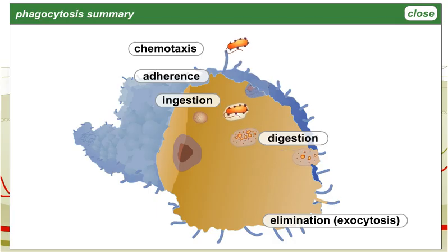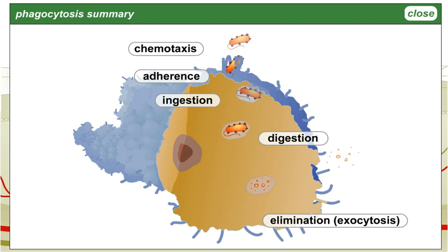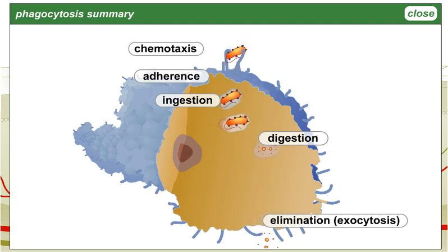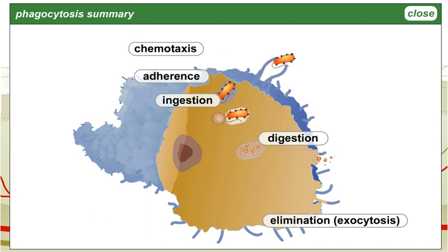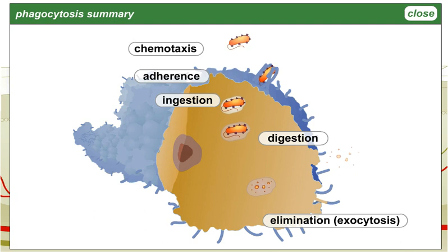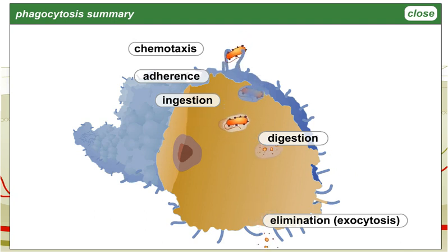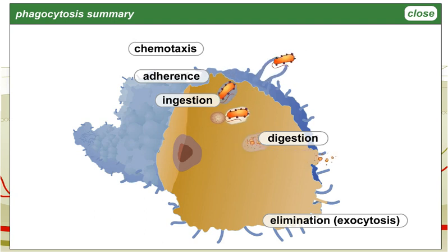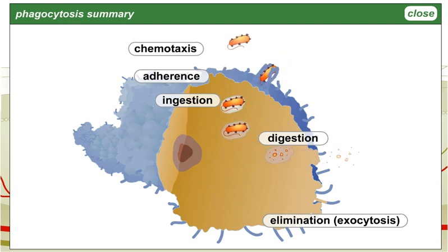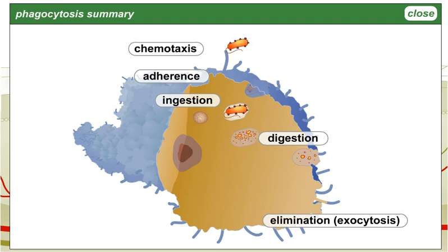Certain immune system cells, such as macrophages and neutrophils, utilize phagocytosis to ingest and destroy invading microorganisms. These phagocytes attack and destroy invaders using chemotaxis, adherence, ingestion, digestion, and elimination. Chemotactic chemicals attract the phagocytes to the site of infection, and opsonins aid in adherence of the phagocytes to the surfaces of the microorganisms.